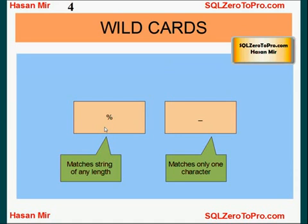If you go '%A', that means any string which is ending with A will match this pattern. We also have the underscore wildcard which matches only one character. So if 'A_' is your pattern, then all values that are two characters in length and starting with A will match this condition.